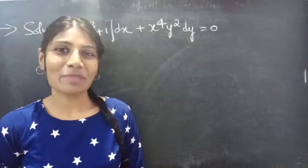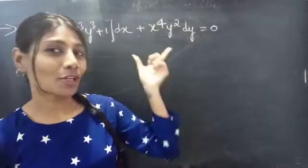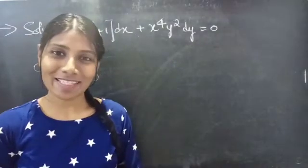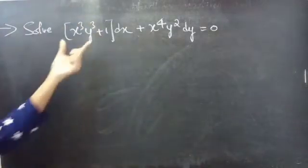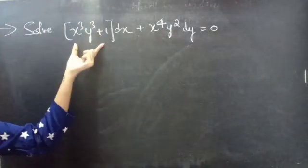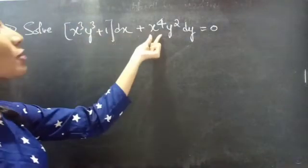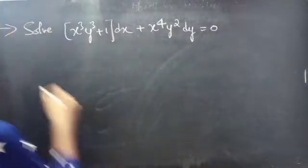Hello everyone, this is Jay Kalpana here. In this video, we are going to solve a non-exact equation. So let's get started. Problem: solve x-cubed y-cubed plus 1 into dx plus x to the power 4 y-squared dy equals 0.